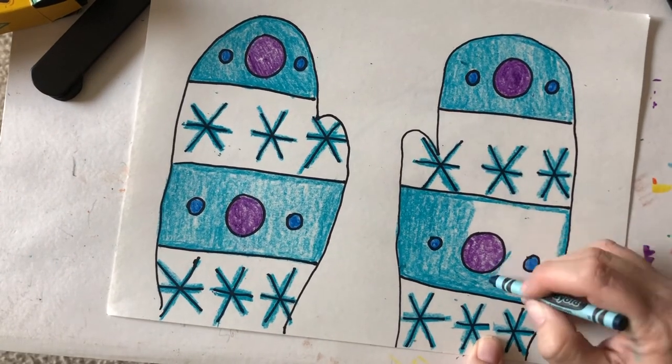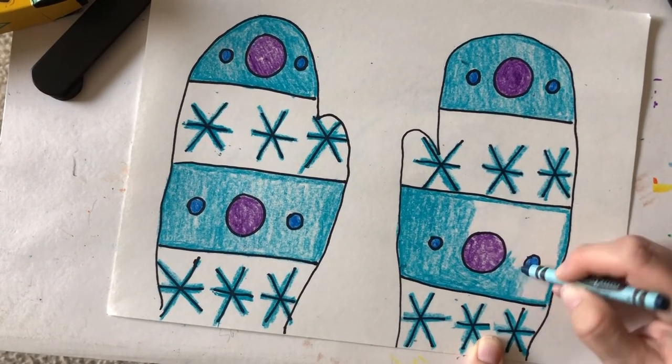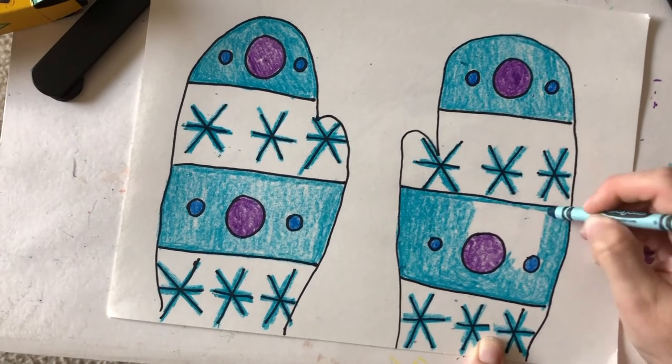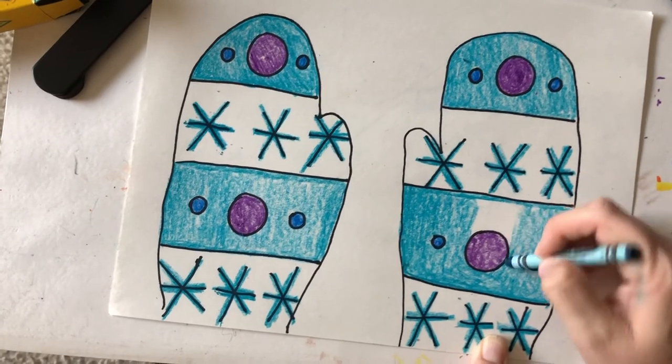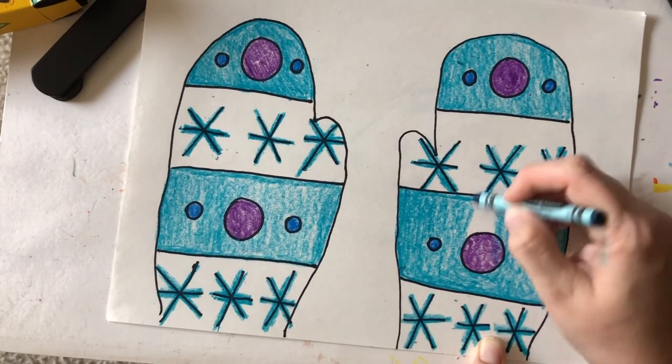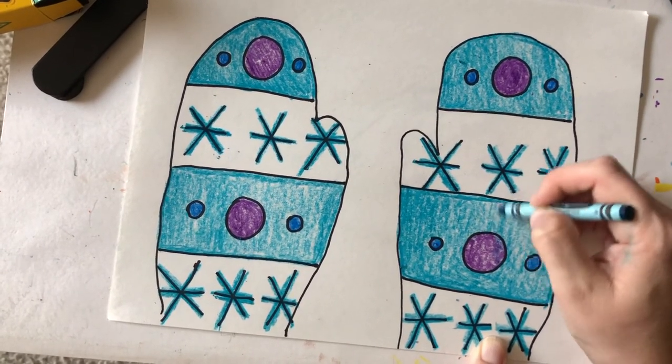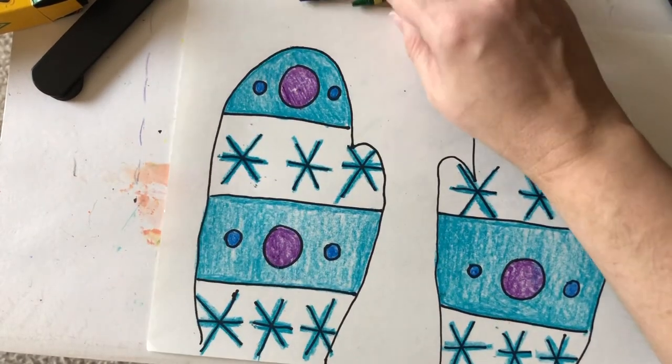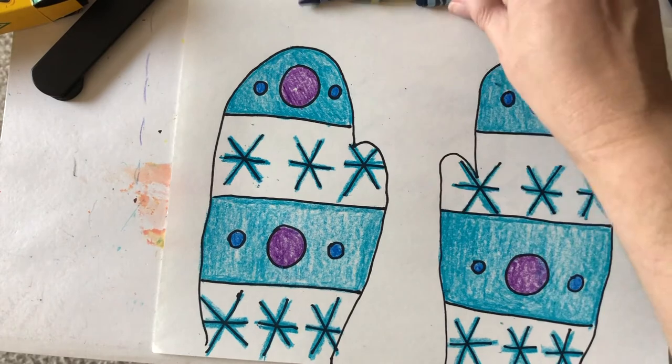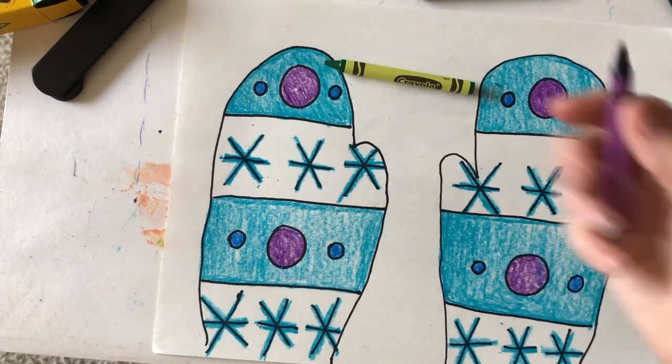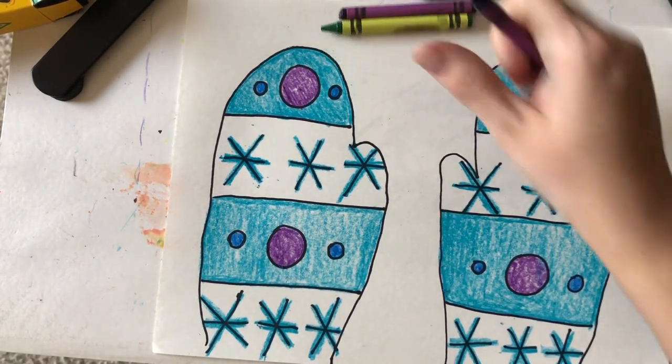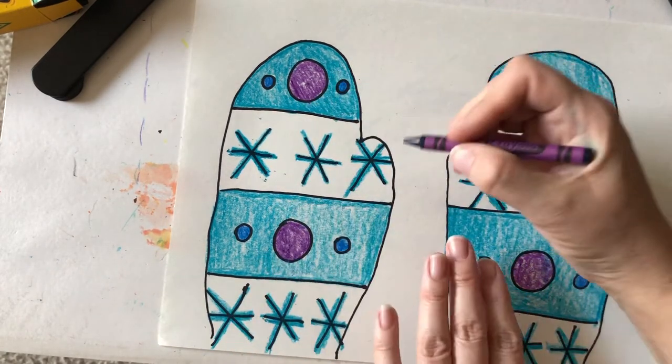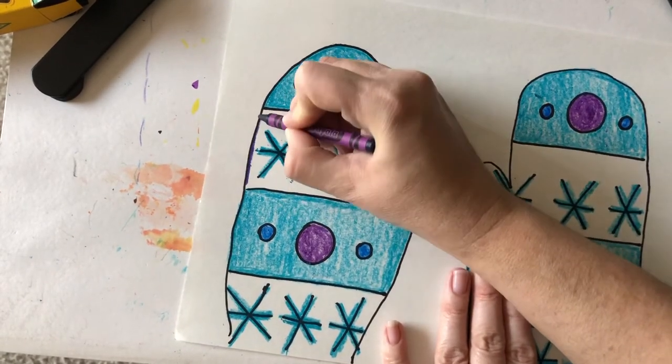Oops. Okay. And then the last thing would be to pick out a color that I want to color in the spaces that have the snowflakes. And I could use any of these colors. I have green and purple. I have other colors in my box. But I think I might go with purple since it kind of already matches the colors that I've been using.